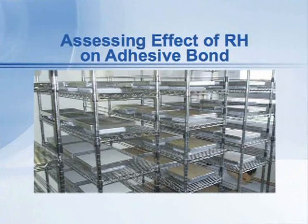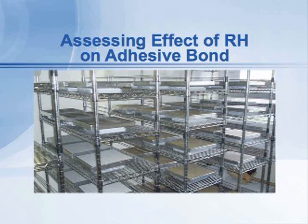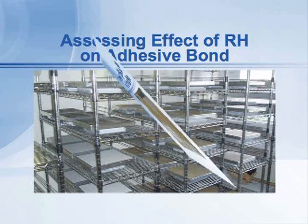We can actually assess the effect of relative humidity that the adhesive sees by doing testing. This picture shows a whole series of standard test blocks of concrete set over standard relative humidity solutions. What we do is take these standard blocks of concrete, place them on top of pans of saturated salt solutions. The water then provides a standard environment of 75% humidity, or 85%, or 95%, and then we let those equilibrate.